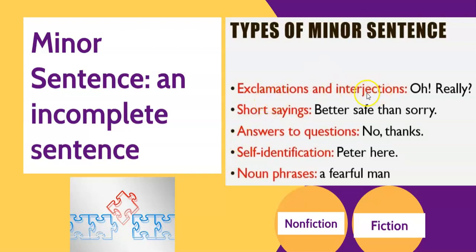Exclamations and interjections. An interjection is something you say when somebody else is talking, for example, 'Oh, really?' Short sayings: 'better safe than sorry.' Answers to questions: 'no thanks.' Self-identification — you might pick up the phone and say 'Peter here.' Or noun phrases, a group of words to describe a noun. I will be making a separate video about these.